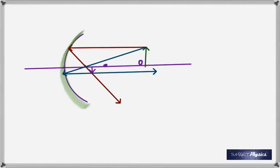Student question: is it safe to say that any time the object is outside of C, the image is always going to be between F and C? Yes — and it's always real and inverted, diminished, between F and C, as long as the object is beyond C.